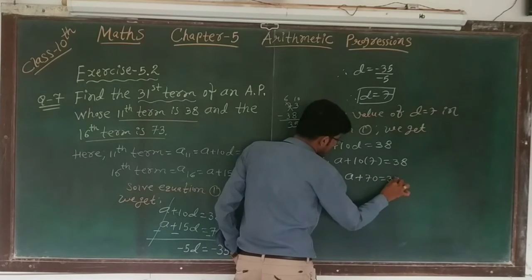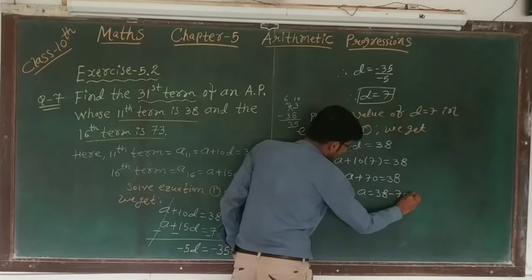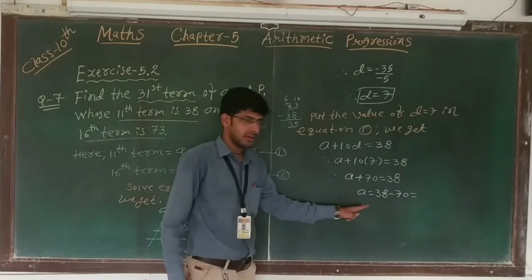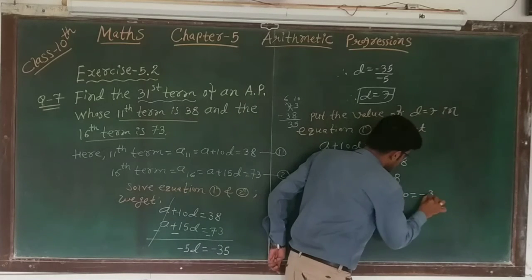Therefore a is equal to 38 minus 70, so 70 minus 38 gives 32, but here 70 is the bigger number, so the answer is minus 32.